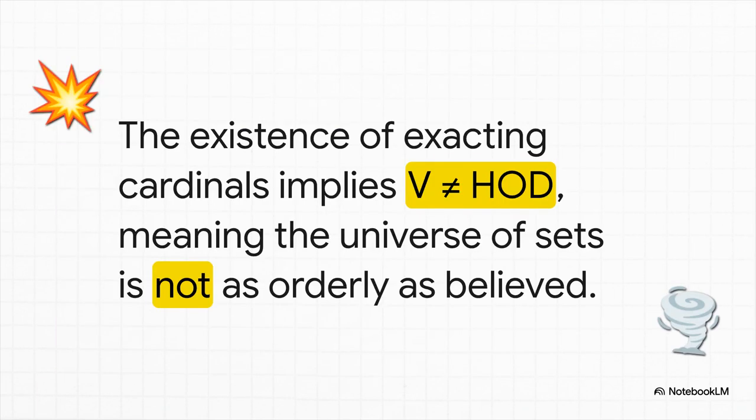And here's the real kicker. If these exacting cardinals exist, it implies that the HOD conjecture is false. In math terms, that's V is not equal to HOD. But for the rest of us, that translates to a radical, mind-blowing idea. The universe of mathematics is not as neatly structured as we thought. It's fundamentally wilder, messier, and more chaotic than our old map ever suggested.